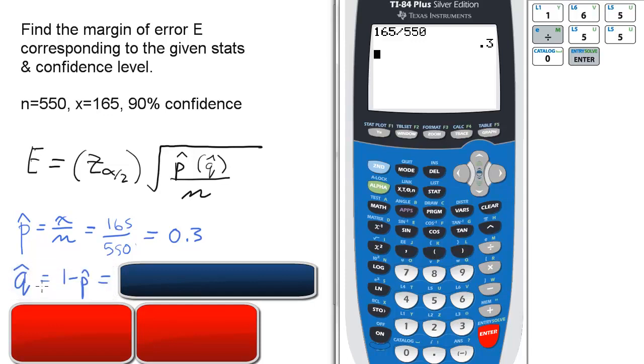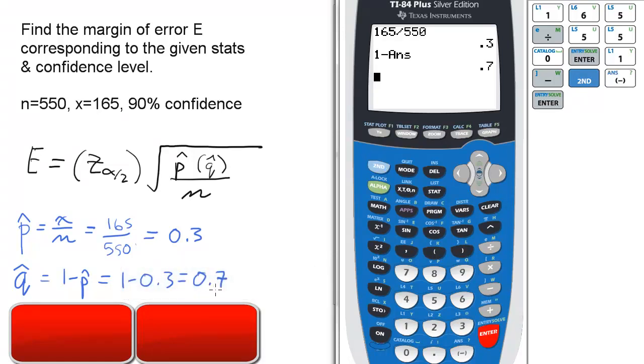Then Q hat is 1 minus P hat. That's going to be 1 minus the answer, and that's 0.7.